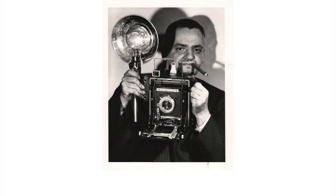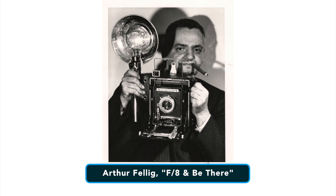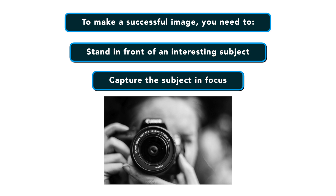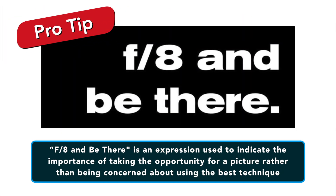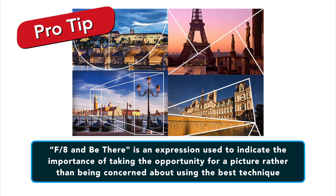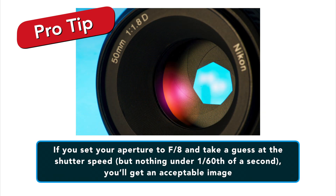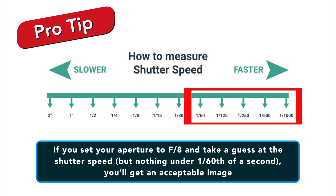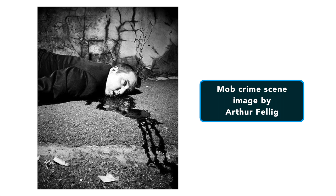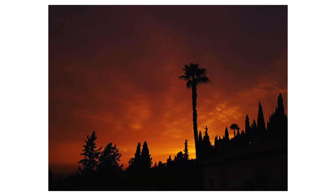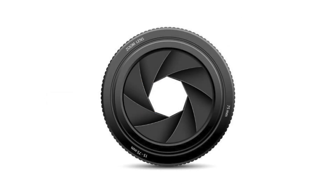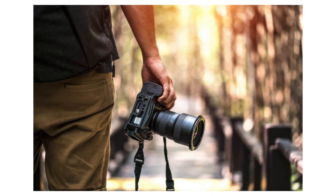Number three: F8 and be there. Legendary photojournalist Arthur Felick coined this phrase in the 1920s. To make a successful image, you need to stand in front of an interesting subject and capture it in focus. F8 and be there indicates the importance of taking the opportunity for a picture rather than being too concerned about technique. If you set your aperture to F8 and take a guess at shutter speed — nothing under 1/60th of a second — you will get an acceptable image. With the camera on aperture priority mode at F8, your shutter adjusts automatically to the ambient light and the aperture allows for a friendly margin of error when focusing.